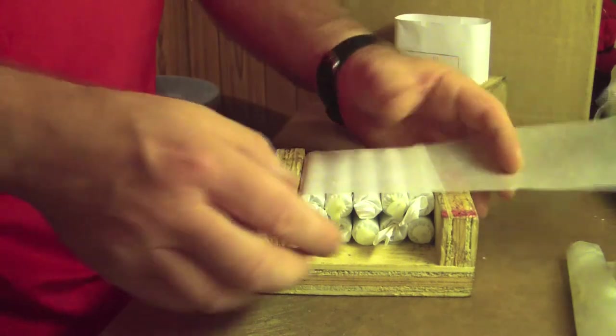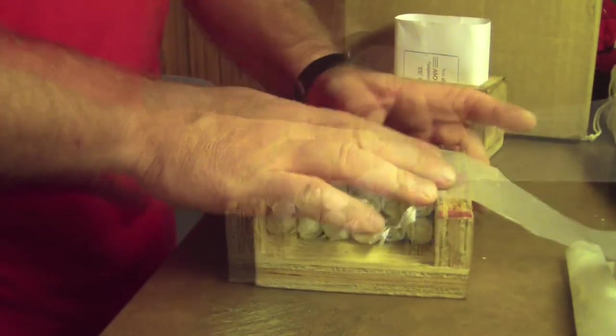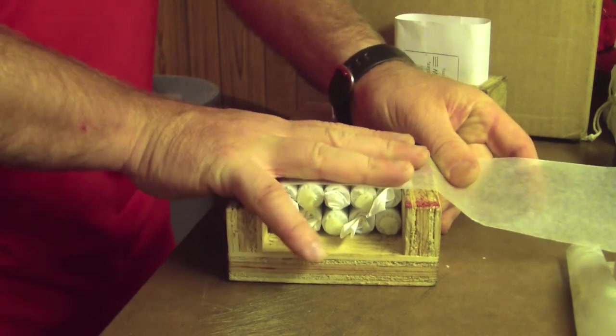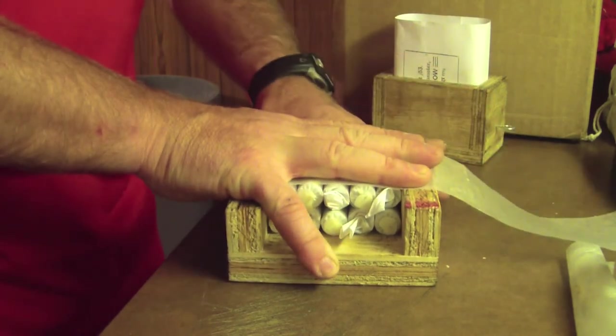Once this is done, we take the tail of the waxed strip and bring it across the top of the bundle, tensioning it slightly. Then, flipping the jig over into the palm of the hand, release the bundle.